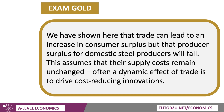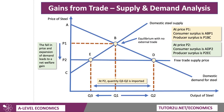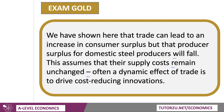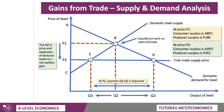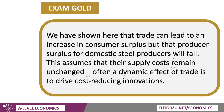Now, this analysis assumes — if I go back the slide — look at the domestic steel supply curve there. This assumes that their costs stay the same. Of course, what might happen — one of the dynamic effects of trade — is to drive cost-reducing innovations. I'll do a separate video to show how you indicate that on the diagram. Domestic producers might decide: we've got this threat from cheaper steel, let's raise our game, raise productivity, improve our efficiency so that we can better compete with trade at price P2.